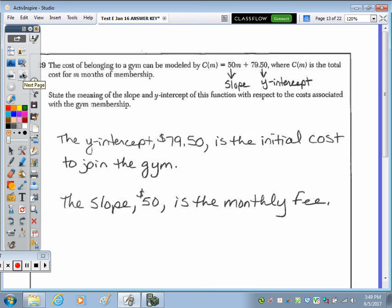Number 29. The cost of belonging to a gym can be modeled by C(M) = 50M + 79.50, where C(M) is the total cost for months of membership. State the meaning of the slope and y-intercept of this function with respect to the cost associated with the gym membership. So the y-intercept is Y = MX + B. That's your B value, or 79.50. And that is the initial cost or the cost to join the gym. And then the slope of $50 is the monthly fee or the cost per month.